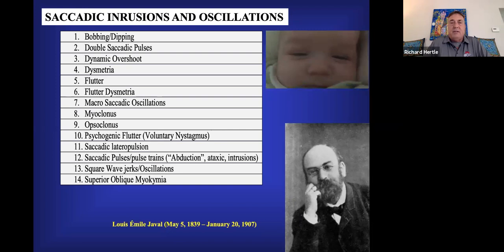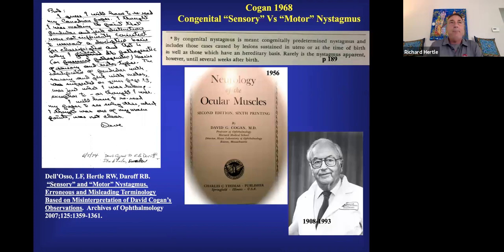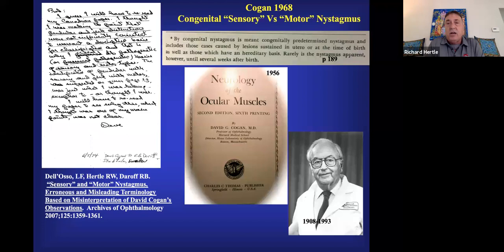Nystagmus is defined by the slow phase — it's the slow movement that is the pathology. Nystagmus typically has a slow phase in one direction and a fast phase in the other. Saccadic oscillations and intrusions are a result of a different neurophysiological problem. All types of nystagmus seem to be a disease of the eye, but they're actually a disease of the brain — this is a neuromotor disease, a neuro-ophthalmic or neuromotor disease.